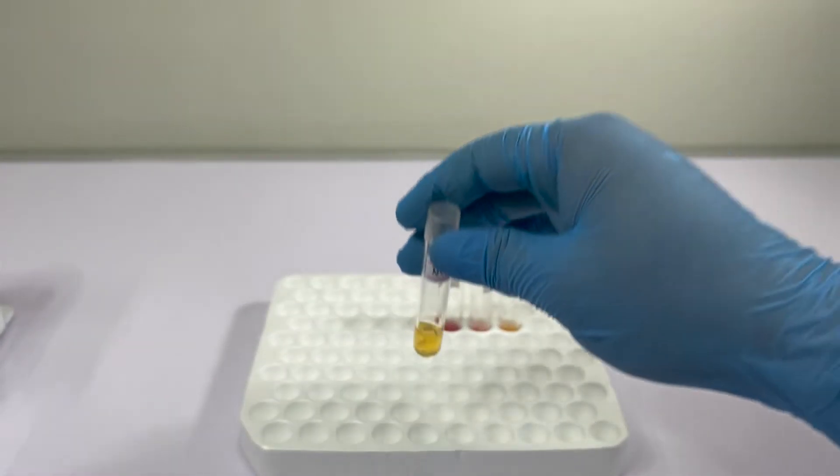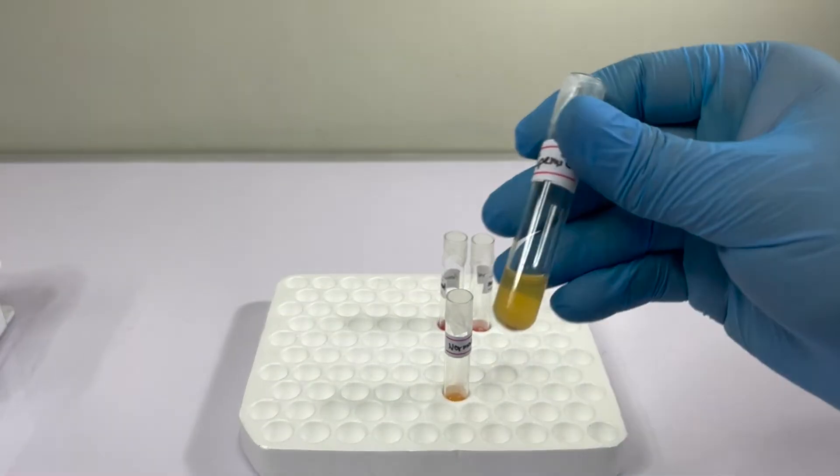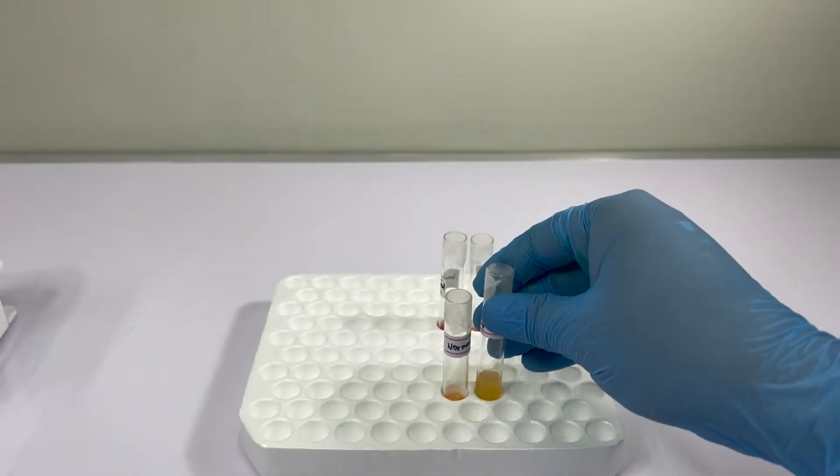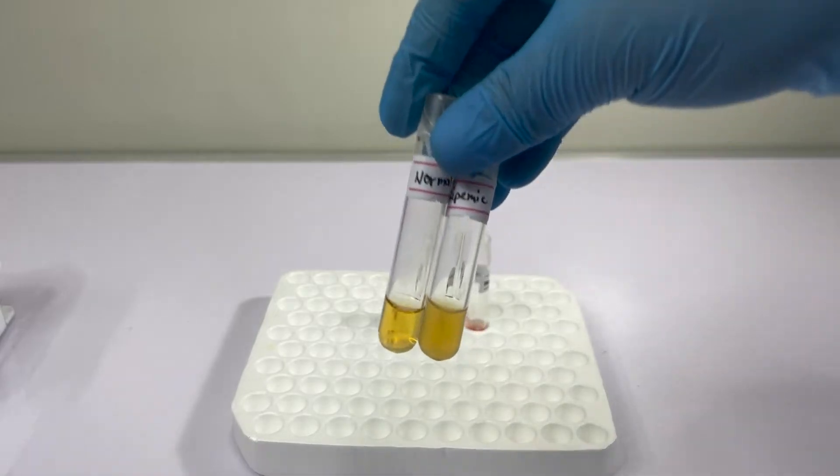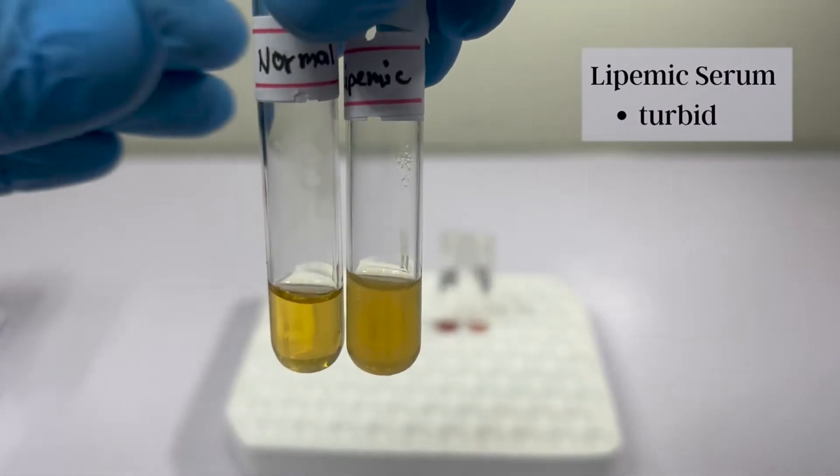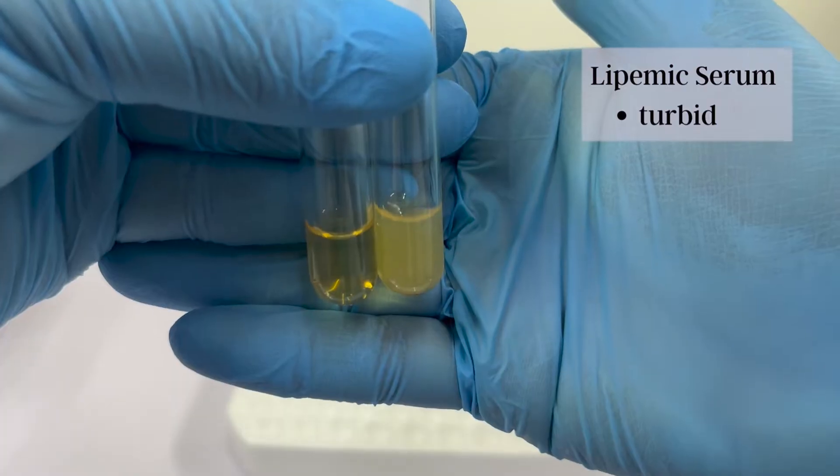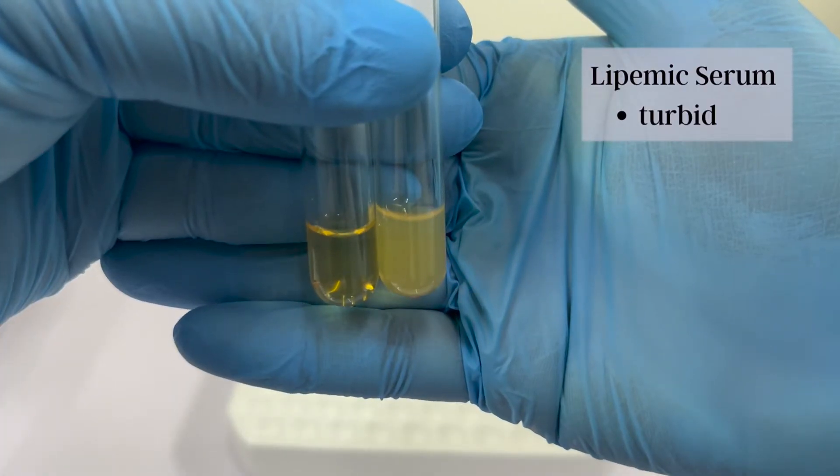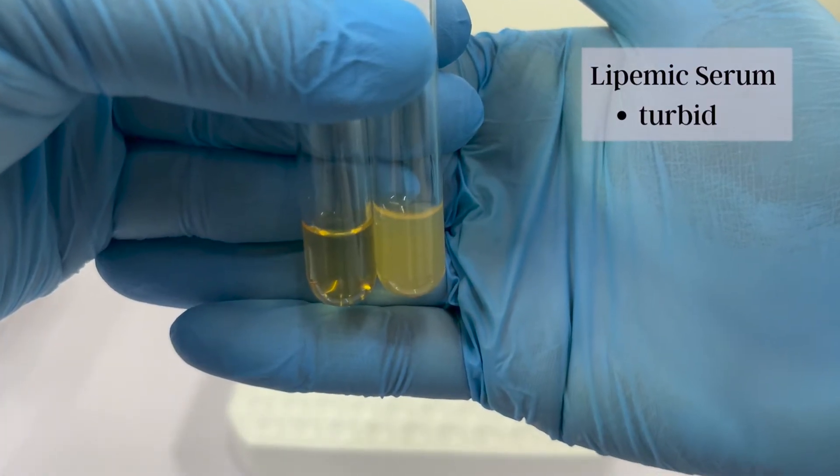Here we have examples of serum that should be rejected when encountered in the laboratory. First is our lipemic serum. Notice that it is more turbid compared to our normal serum. This is due to an increase in lipids in the blood, namely your triglycerides.